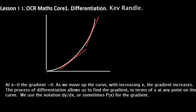If we consider a curve, say in this case y equals x squared, at x equals 0 the gradient of that curve is 0. So the curve is horizontal at x equals 0, so the gradient is 0. As we move up the curve with increasing x, the gradient increases.